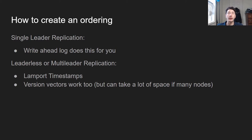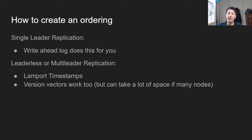So how do we create an ordering? Assuming we have something like single-leader replication with no partitioning, where all writes are going through one node, we have a write-ahead log which is going to do this for us. However, this gets a lot more complicated in a scenario where there's leaderless or multi-leader replication. There are two ways of basically doing this: one is called Lamport timestamps, which I'll cover next, and another is version vectors, which work as well but can take a lot of space if there are a lot of nodes.